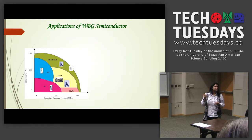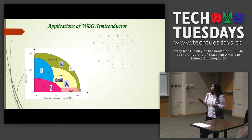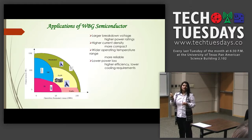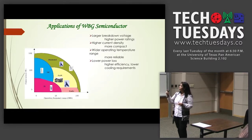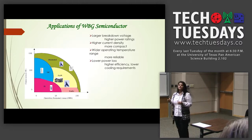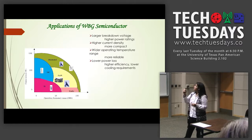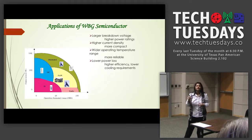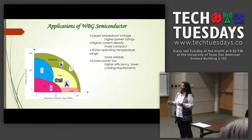Gallium nitride is known as a wide bandgap material because its bandgap is very high, allowing it to handle high power and high temperature. Silicon-based electronics currently dominate commercially but are limited in frequency and output power. Researchers are working on alternatives: silicon carbide for high power, gallium nitride for high power and high frequency, gallium arsenide, and diamond — which is the best but very expensive and still under research.